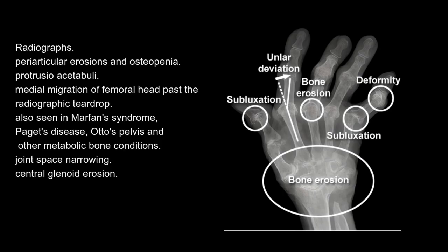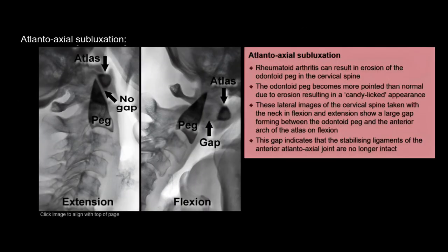Otto's pelvis and other metabolic bone conditions also show protrusio acetabuli. Additional radiographic findings include joint space narrowing, central glenoid erosion, and atlantoaxial subluxation. Rheumatoid arthritis can result in erosion of the odontoid peg in the cervical spine, which becomes more pointed than normal due to erosion, resulting in a candy-licked appearance.